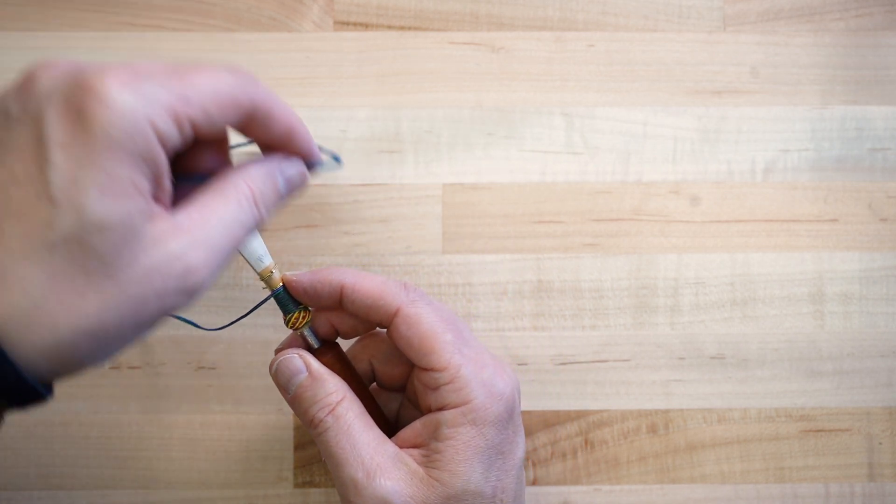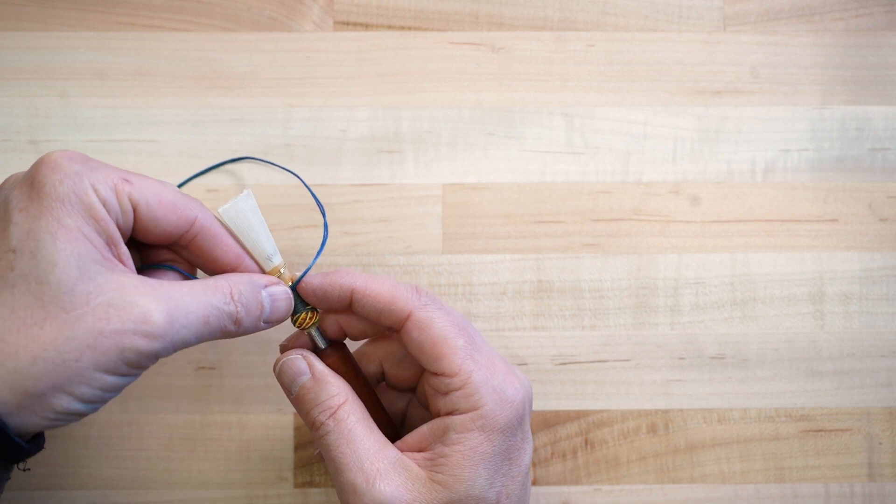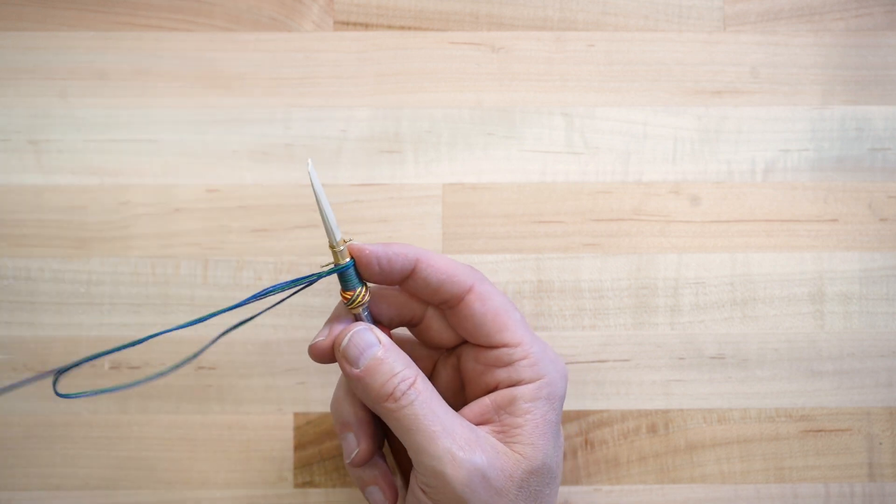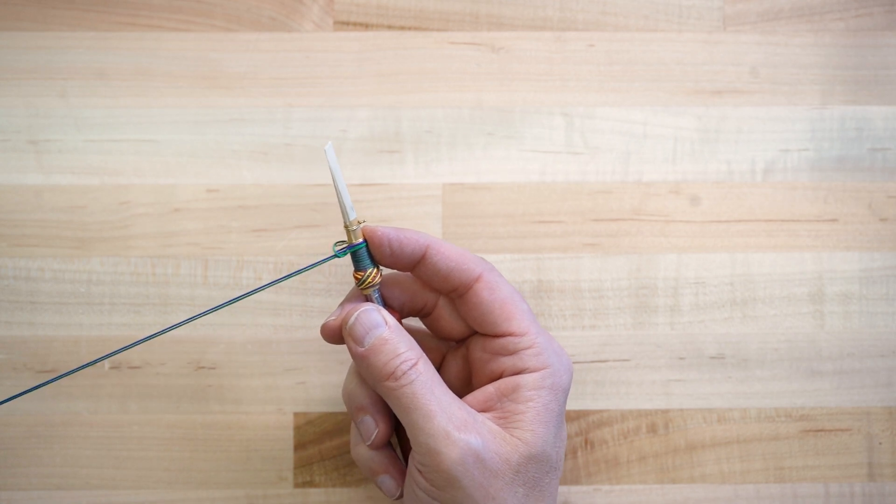Once at the second wire, create a loop and feed the end of the string through. Pull the string to cinch it down.